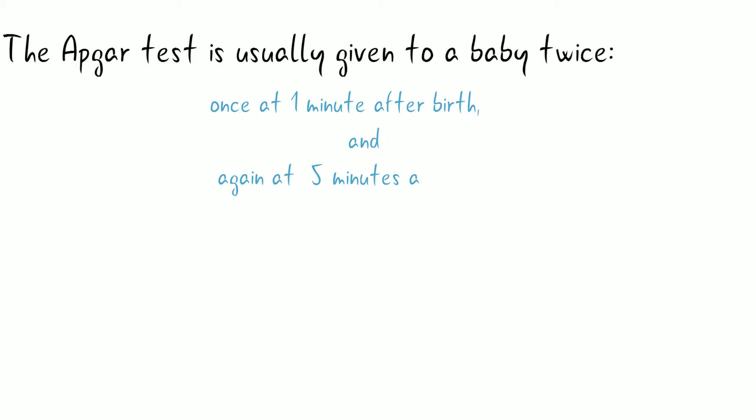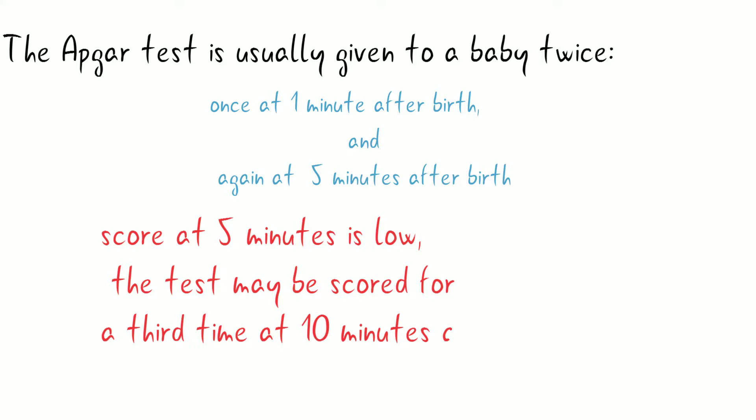The Apgar Score test is usually given to the baby twice: once at 1 minute after birth and again at 5 minutes after birth. Sometimes, if they are concerned about the baby's condition or the score at 5 minutes is low, the test may be scored for the third time at 10 minutes after birth.